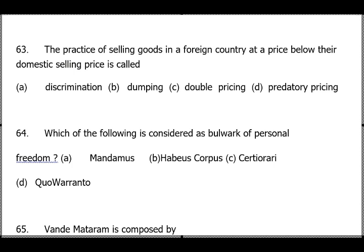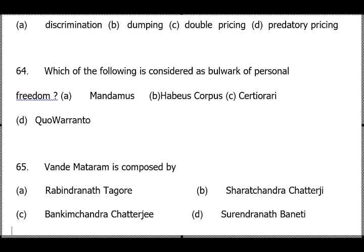Question 64: Which is considered the bulwark of personal freedom? Answer is Habeas Corpus. Under Article 32, the Supreme Court has writ jurisdiction; under Article 226, High Courts have writ jurisdiction — and High Courts' power is greater as they cover fundamental rights as well as legal rights. Other writs: Mandamus commands persons not performing their functions to do their duty. Fundamental rights are enforced only against the state, not against private individuals.